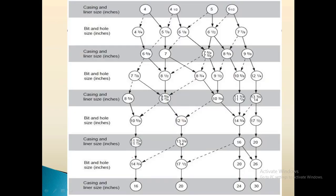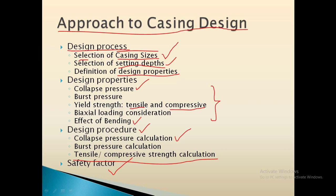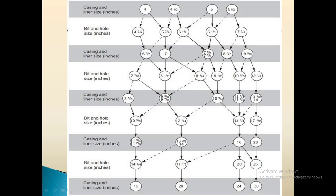Let us approach the first point, which is selection of casing size. This is a standard casing chart approved by API, the American Petroleum Institute. We always start designing the casing from the bottom. Let's consider we are planning for a 4-inch casing size or liner size. Once we select the casing size, we can approach for two bit sizes: to drill a 4-inch casing we can use a 4¾-inch bit size, or we can use a 5⅞-inch hole size.